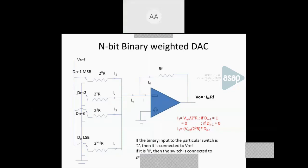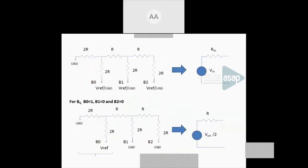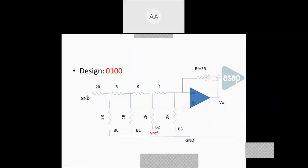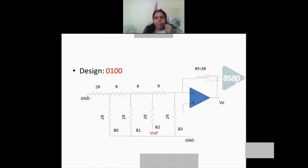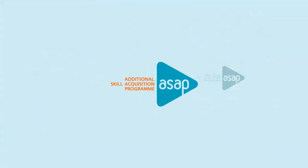In the R2R ladder DAC circuit, the resistance on the leftmost side is 2R. The last 2R in the circuit is for balancing the whole circuit — it is always 2R and not R. This is an important detail to remember. The session concluded with thanks to ASAP, the participating students, and the instructor.